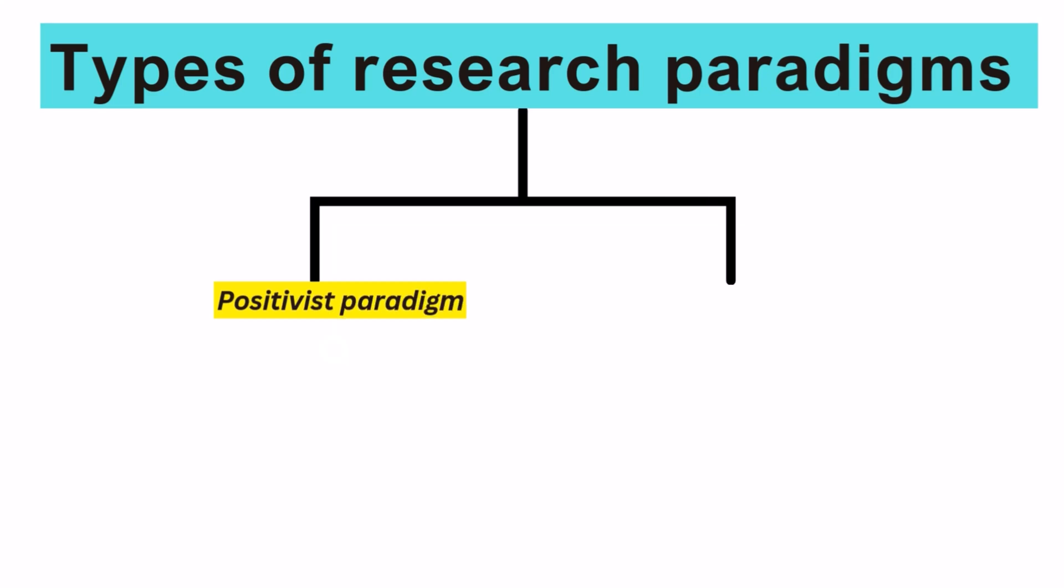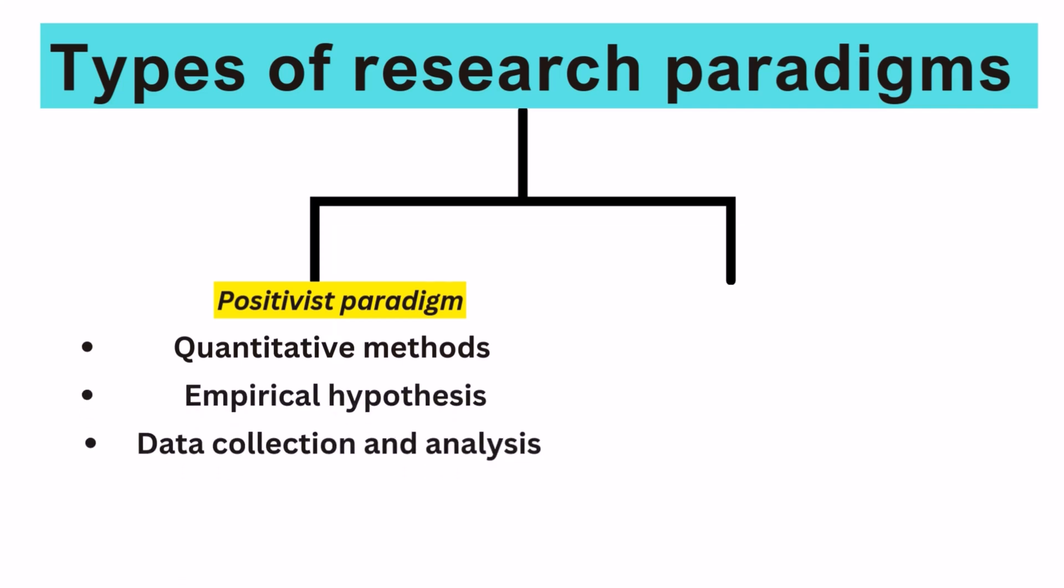One, positivist paradigm. Proponents of a positivist paradigm believe that there is a single reality that can be measured and understood. Therefore, these researchers are likely to utilize quantitative methods in their studies. The research process for positivist paradigm studies tends to propose an empirical hypothesis, which is then supported or refuted through data collection and analysis.